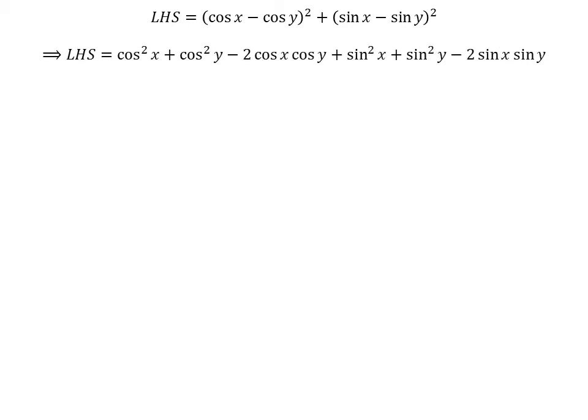Expanding the square terms, the left hand side equals: square of cosine x plus square of cosine y minus 2 times cosine x times cosine y, plus square of sine x plus square of sine y minus 2 times sine x times sine y.